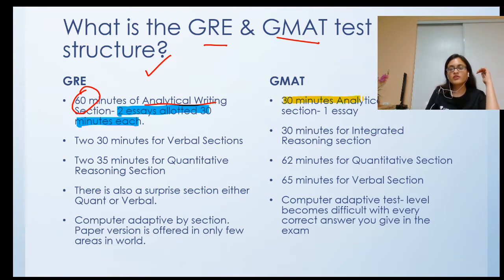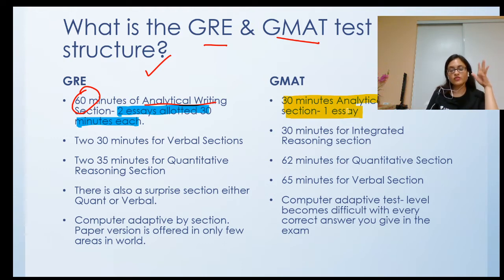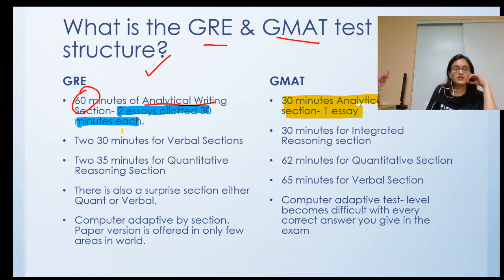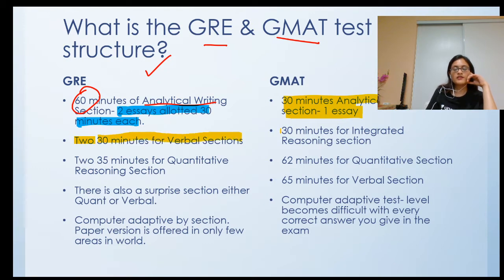In GMAT, you get 30 minutes to write one AWA essay, which is absolutely possible if you practice properly. In GRE, there are two verbal sections of 30 minutes each, and in GMAT, there is a 30-minute integrated reasoning section.